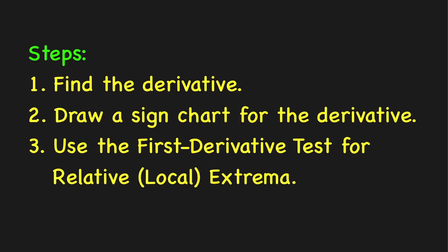If you're given a function f, here are the steps for finding the local minimum or local maximum. First, find the derivative of the function. Second, draw a sign chart for the derivative. And lastly, apply the first derivative test to determine whether the function has a local minimum or local maximum at a critical number.